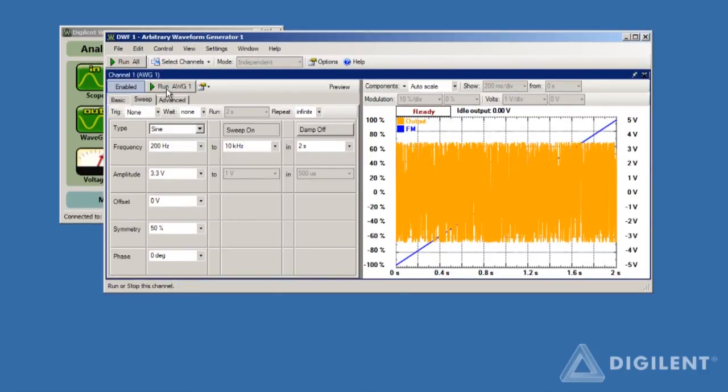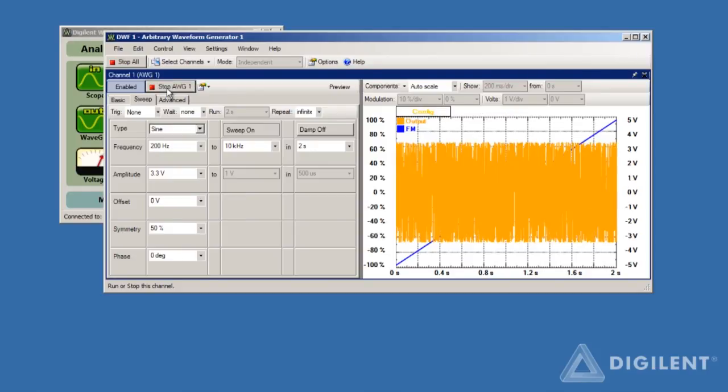To hear the signal, click on Run AWG1. The sound starts at a low tone and the frequency of the tone increases as the time increases. Once we get to the high frequency, the process starts over.